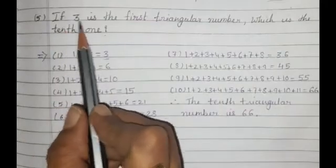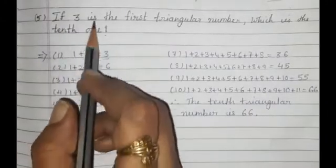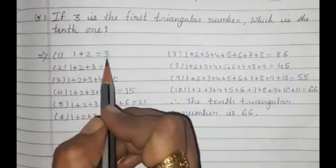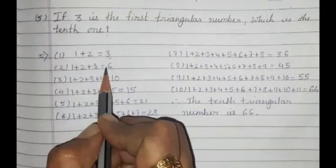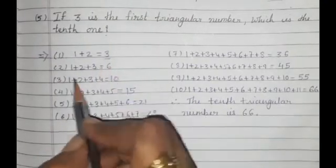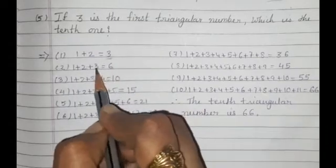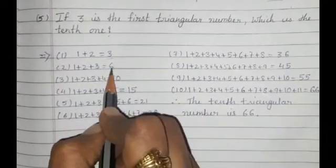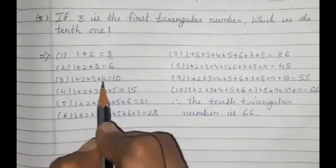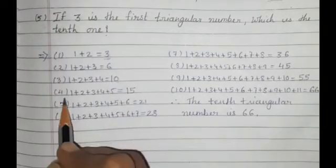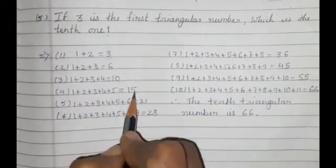Question number 5: If 3 is the first triangular number, which is the 10th one? The first triangular number is 1+2=3. The second is 1+2+3=6. Then 3+4=10 (third), 10+5=15 (fourth), 15+6=21 (fifth).